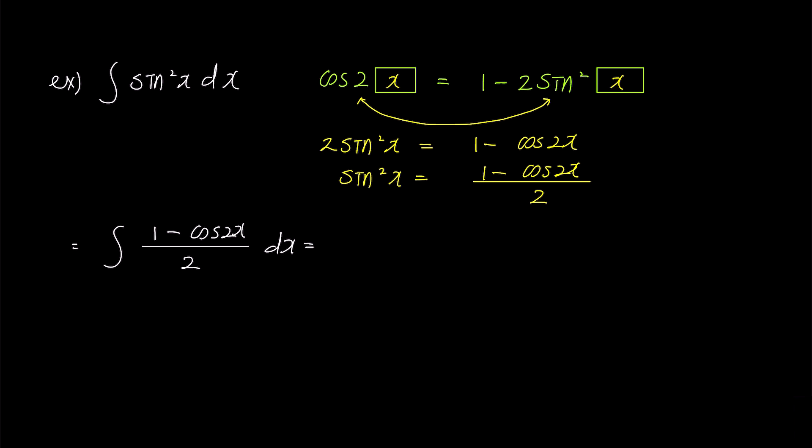If we move the denominator 2 to the front, it becomes half times integral 1 minus cosine 2x dx, and expanding this integral gives us half times integral 1 dx minus half times integral cosine 2x dx.